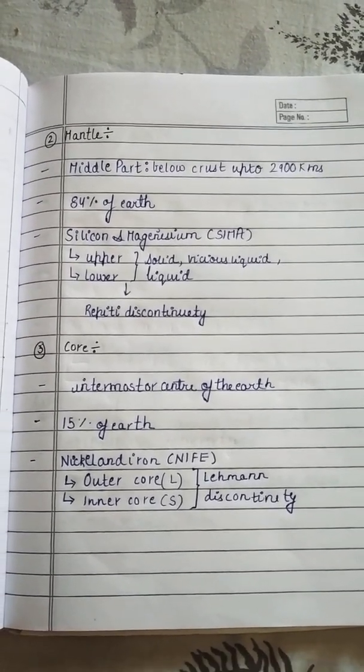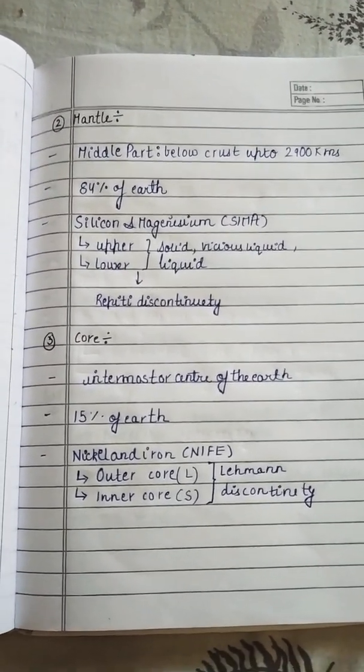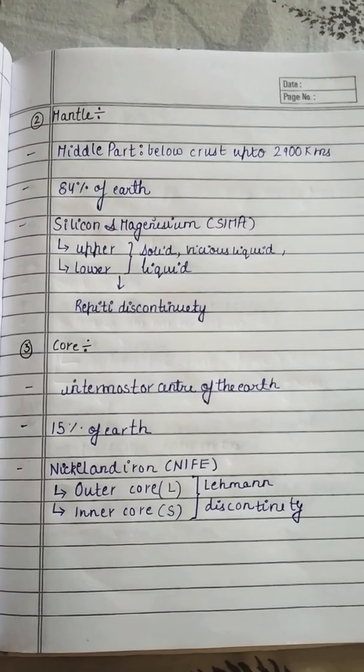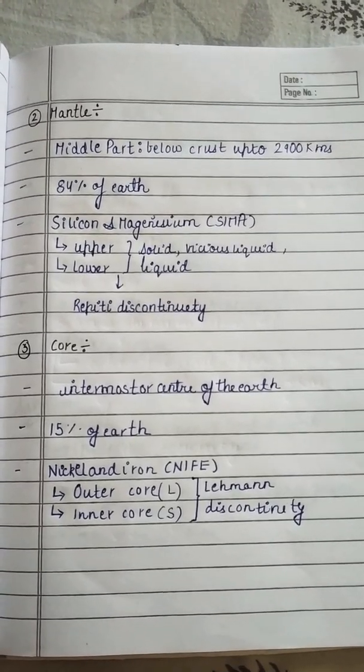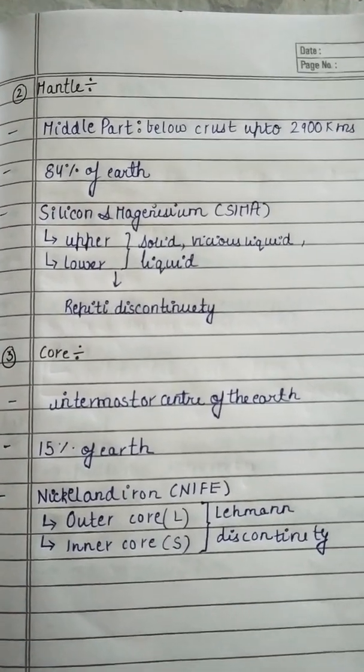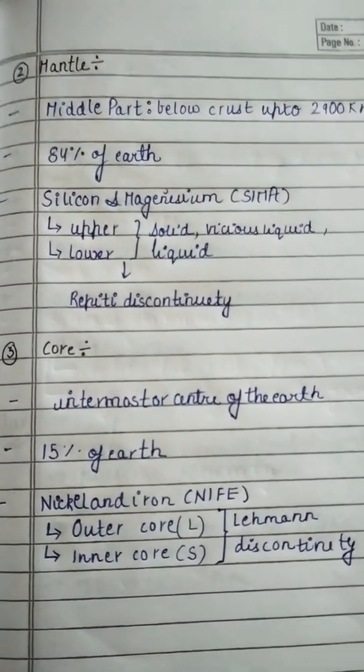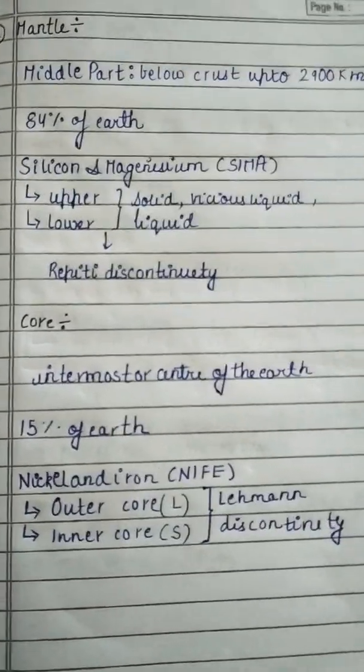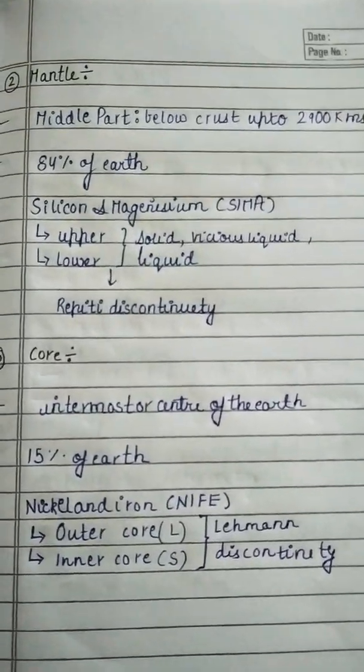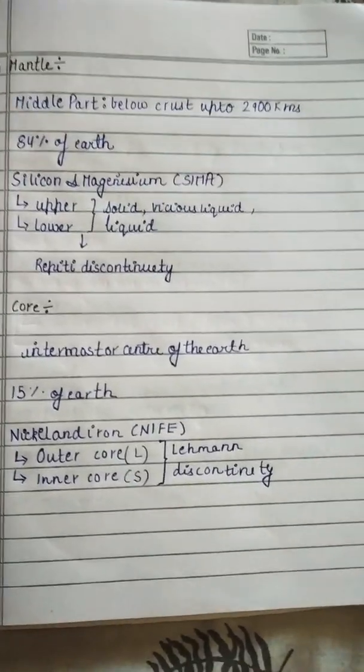So we move to the third, core. Innermost center of the Earth. 15% of the Earth. Made of nickel and iron. Outer core is liquid, inner core is solid. Lehmann discontinuity. So here we move to the last part of the interior of the Earth.